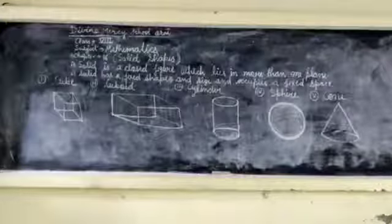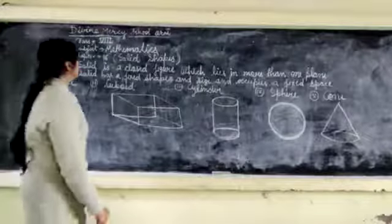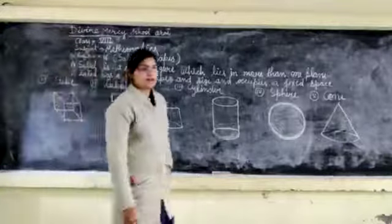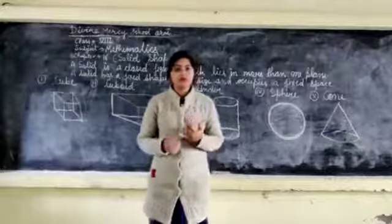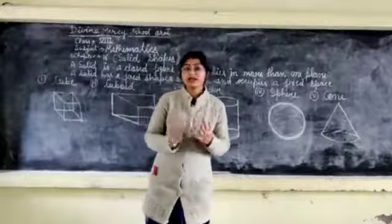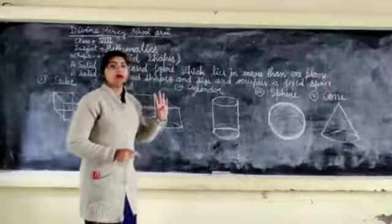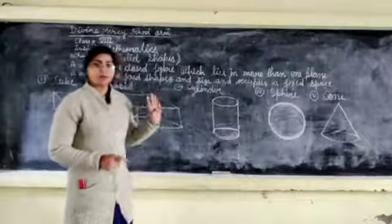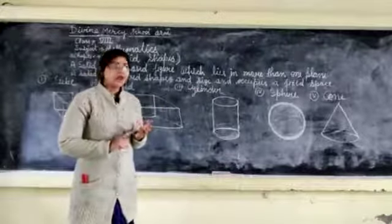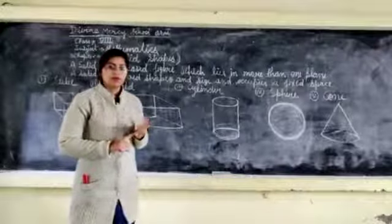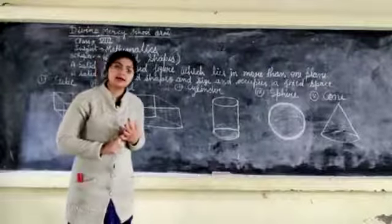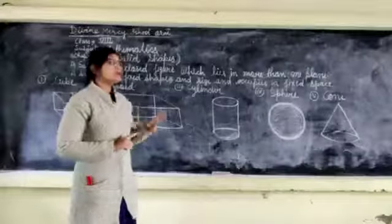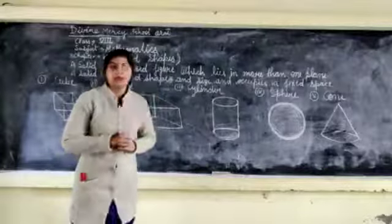Good morning students. Today I am teaching you chapter 60, solid shapes. In the previous class I told you about plane shapes and solid shapes. For plane shapes, I told you there are four: triangle, square, rectangle, and circle. These four are plane shapes.